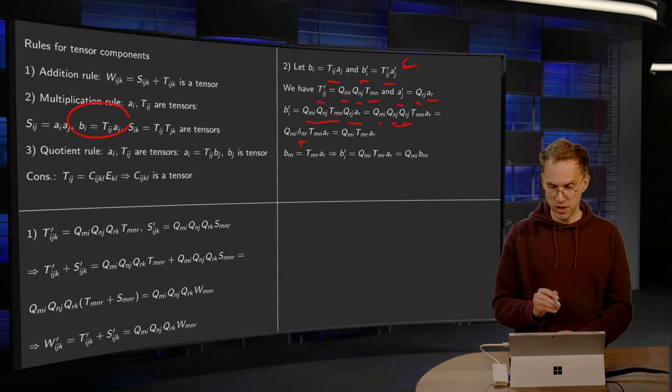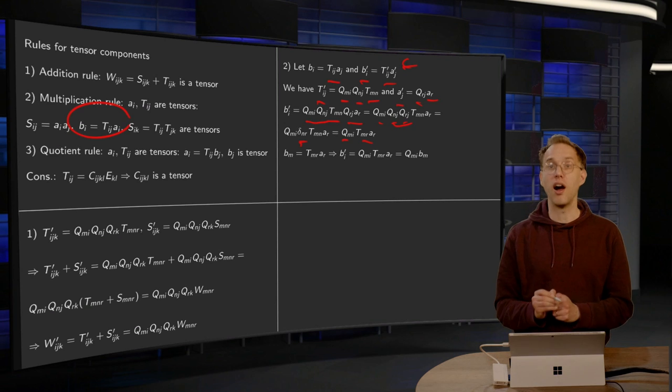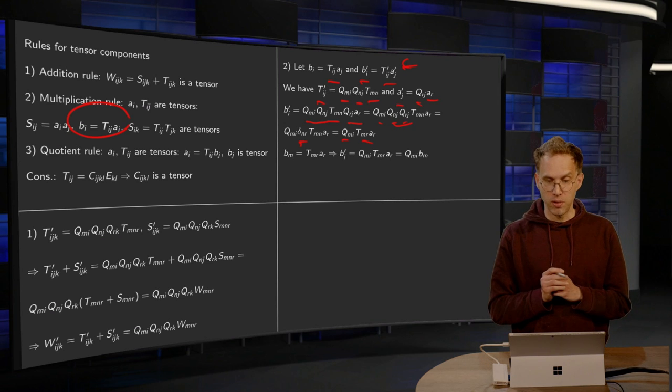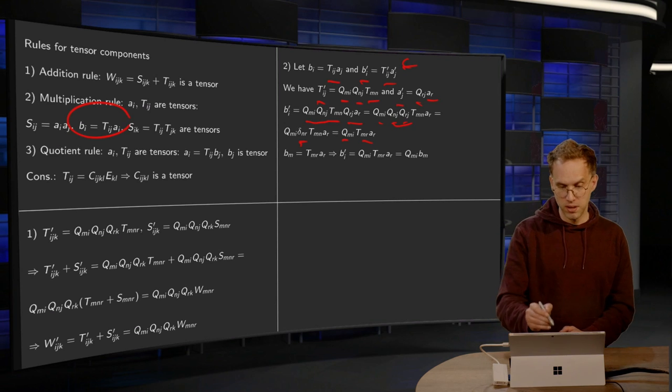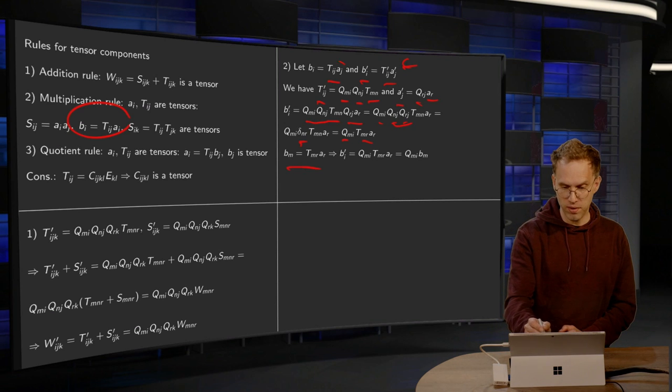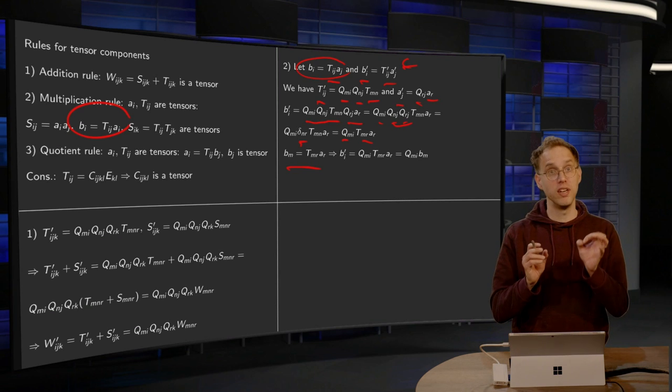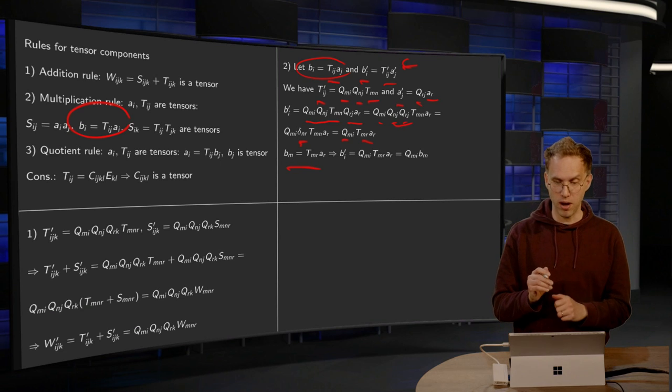And then we can do the summation over the n, so we are left with Qmi, Tmr, Ar. Now we know we can write bm equals Tmr Ar, using what bi was, just renaming i to m and j to r, so we know bm equals Tmr Ar.